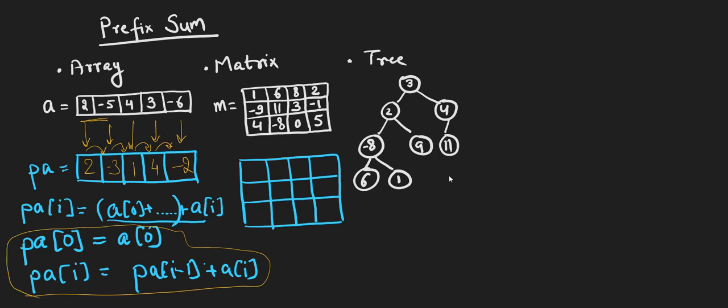Using a linear scan we can fill the prefix sum array easily. This is useful in solving a lot of subarray-related problems. This video talks about generalization of the prefix sum concept. In a 1D array we've seen how to calculate prefix sum. Now there are some matrix problems that require prefix sum of a matrix. Let me formally define what prefix sum of a matrix is at any cell.